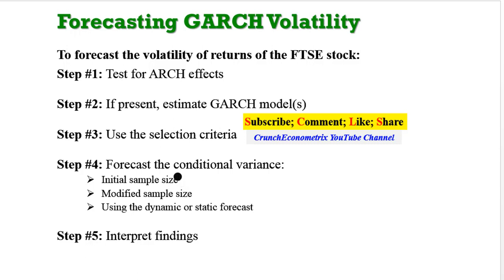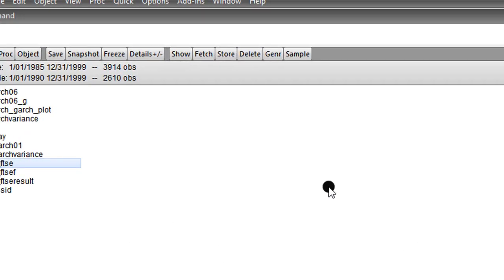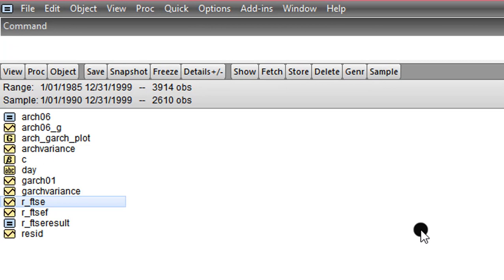I'll use two different approaches: the initial full sample and the modified reduced sample. I'll use the static forecast because not much information is obtained from the dynamic forecast. I'll then interpret our findings. The first thing is to forecast the conditional volatility using the full sample as I've been doing before.